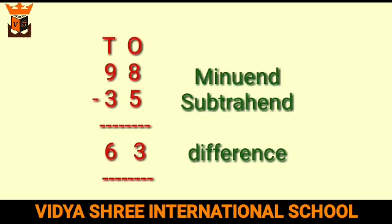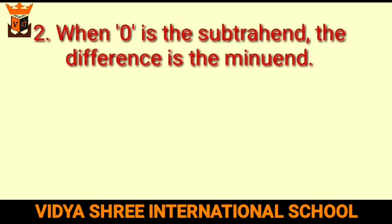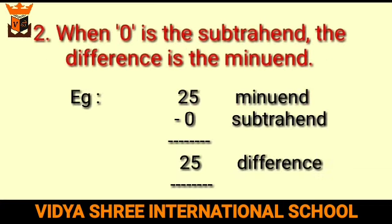The answer we get after subtraction is called the difference. Always remember: when the minuend is the same as the subtrahend, the difference is always 0. For example, 25 minus 25 equals 0. And when 0 is the subtrahend, the difference is the minuend itself. For example, 25 minus 0 equals 25.